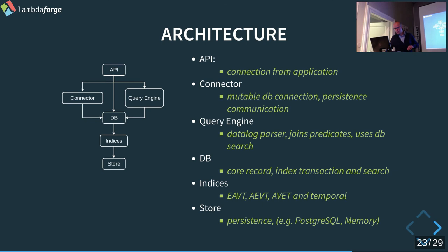Since we now have a temporal component, we mirrored the three indices — so altogether we have six indices if you're using the temporal index. The store is underneath as the persistent layer — this could be Postgres, in-memory (just an atom), LevelDB, or we have a Redis variant somewhere.